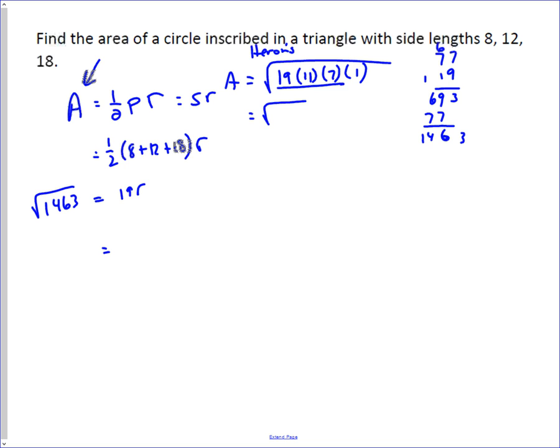Which means the radius of the inscribed circle is going to be the square root of fourteen hundred and sixty-three over nineteen.